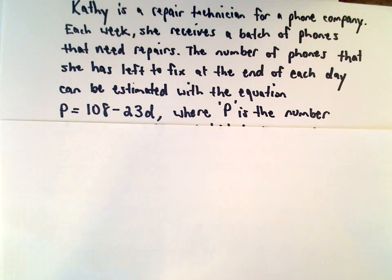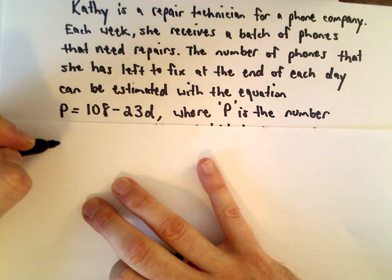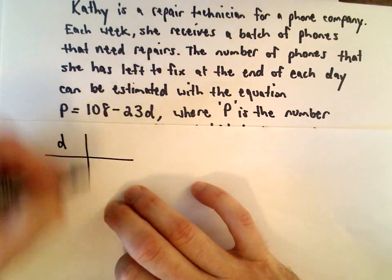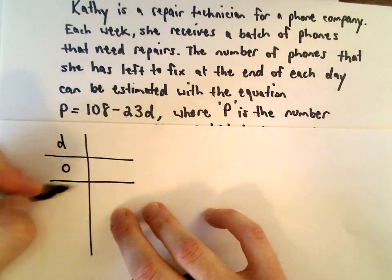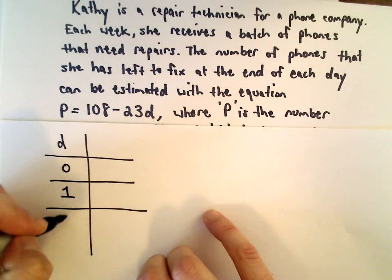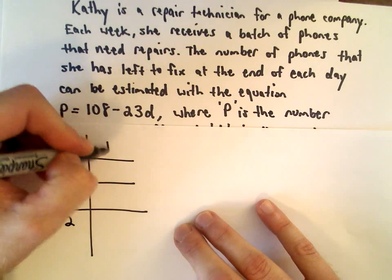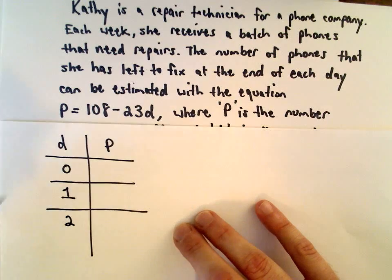If you weren't sure, you could always start plugging in some numbers and think about what happens. So, d is going to be the number of days that she works. I'm going to start with 0, then I'll plug in 1, then I'll plug in 2. P is going to be the number of phones that she still has to fix.